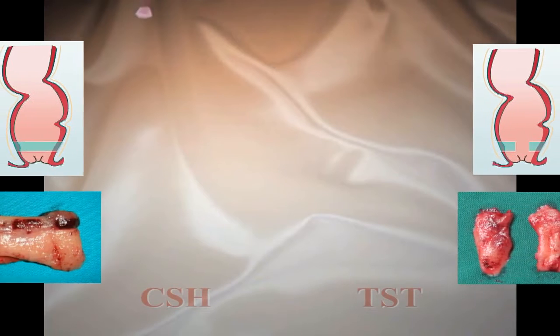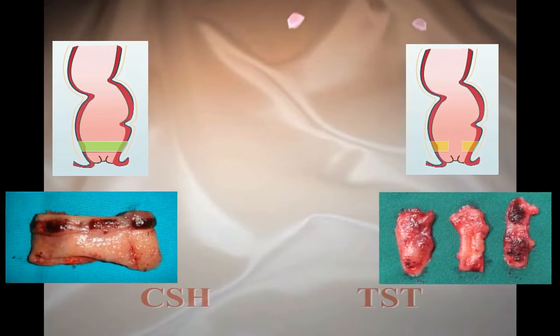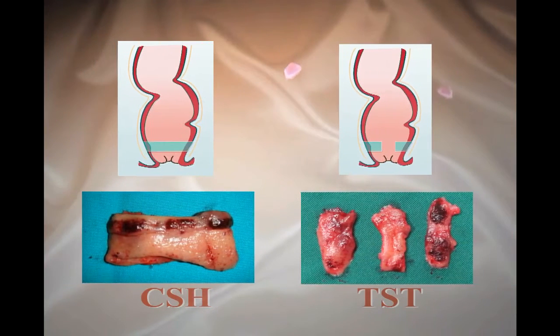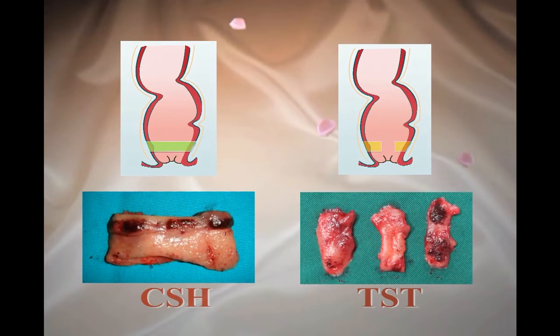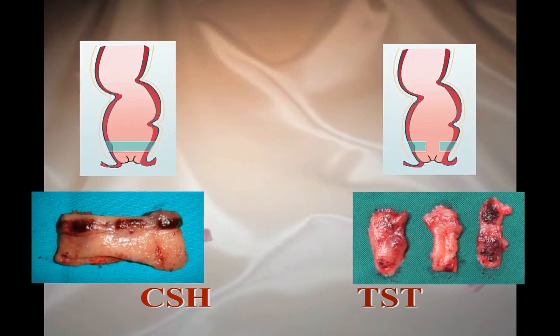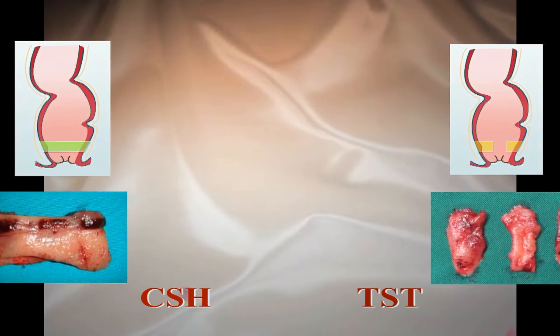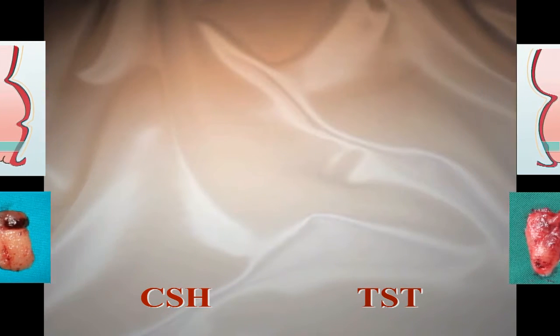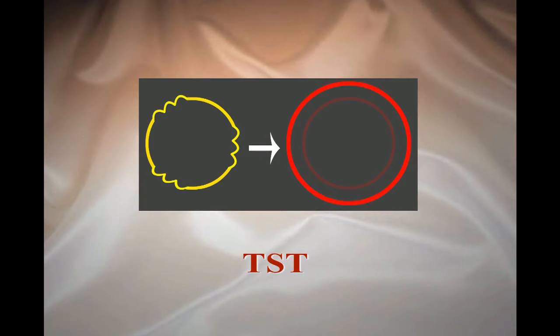The significant difference between TST and conventional stapled hemorrhoidoplexy is the preservation of normal mucosa between the mucosectomies in the TST procedure, thus resulting in better rectal compliance than that in conventional stapled hemorrhoidoplexy.